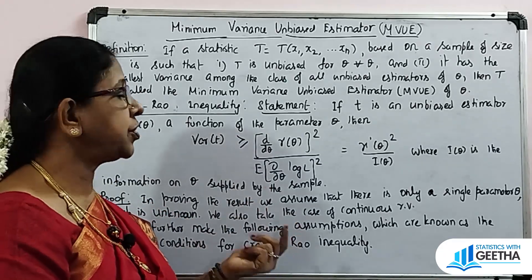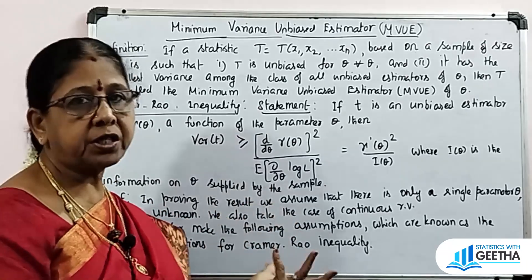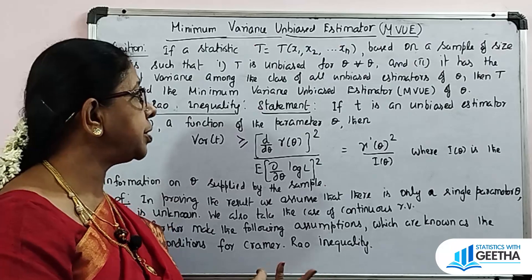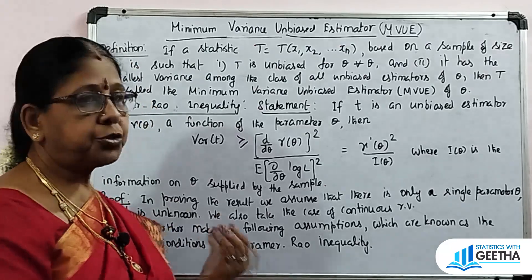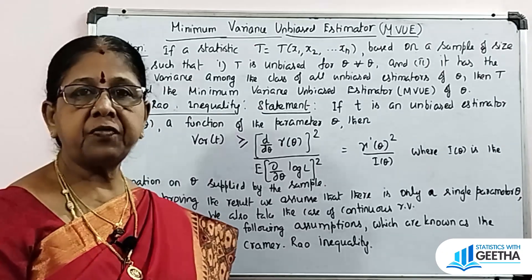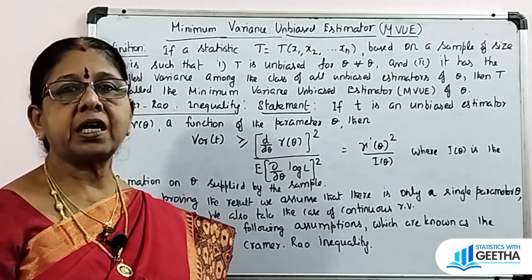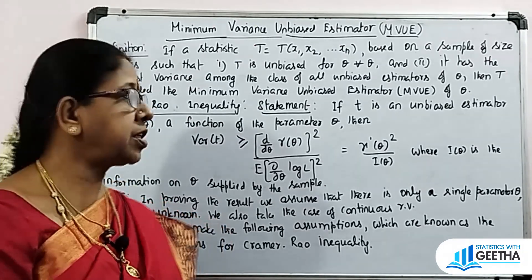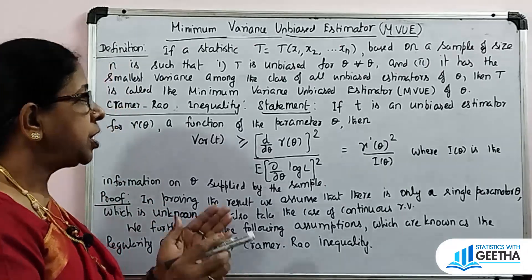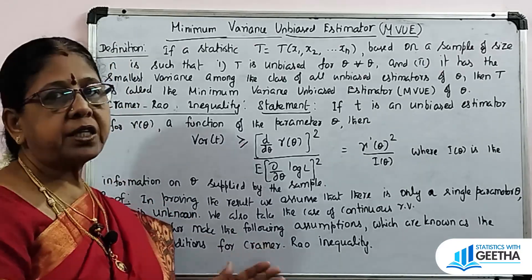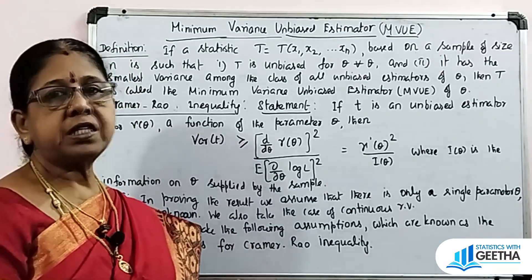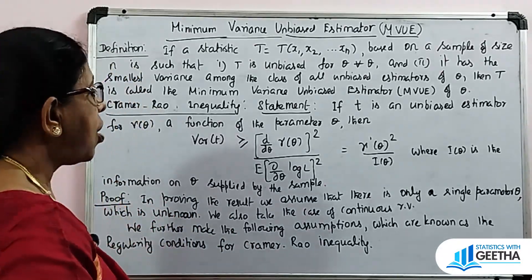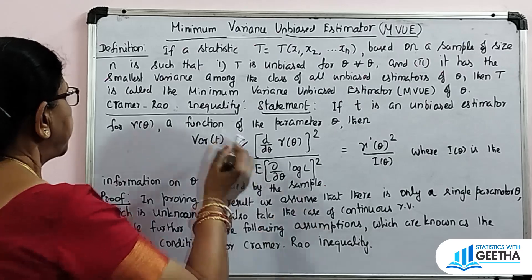To summarize: t must be an unbiased estimate for all theta, and t should have the minimum variance among the class of all unbiased estimators of theta. Then t is called the Minimum Variance Unbiased Estimator of theta.